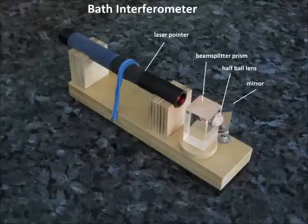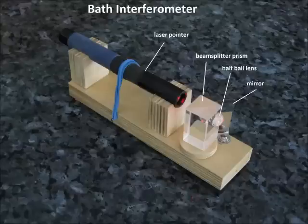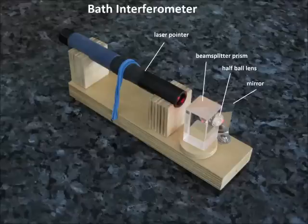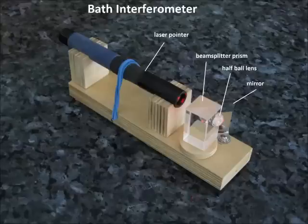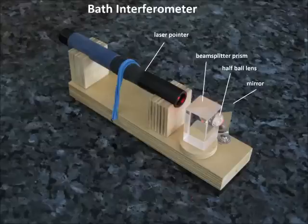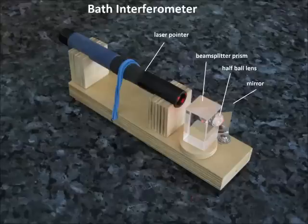But you might ask, can any ATM do the same thing? And probably not, an interferometer and null lenses is going to be rather expensive. But you can build a bath interferometer like the one pictured here. I built this one using some components I had laying around: a laser pointer, beam splitting prism, half ball lens, and a piece of mirror. And you can do the same thing.